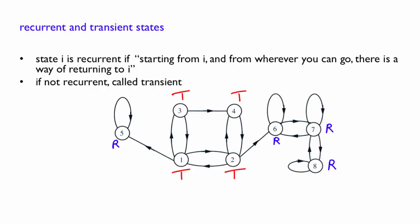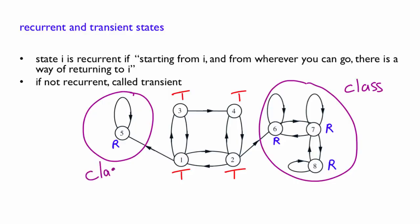The recurrent states of a Markov chain can be grouped in different classes. Here, in this example, we have two such classes. Here, this is one class. And here, you have another class.